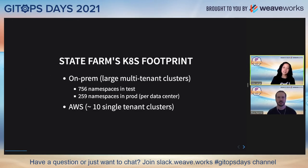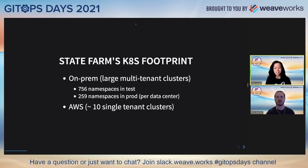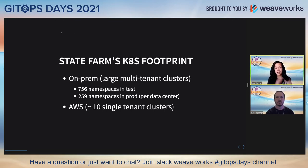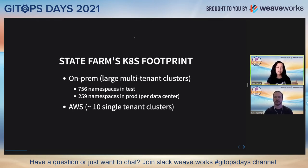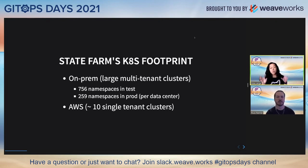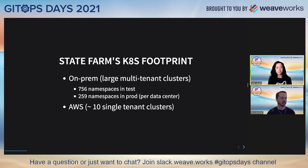Let's first establish State Farm's Kubernetes footprint. Whenever we say a large multi-tenant cluster or fleet of clusters, what we mean is 750-plus namespaces in tests and around 250-plus namespaces in prod, and that is for data center. We do have EKS clusters out in AWS, hovering around 10, and those are all single-tenant clusters. For the rest of our talk, we will be focusing on our large multi-tenant on-prem Kubernetes clusters.